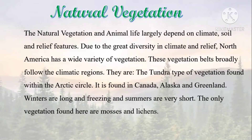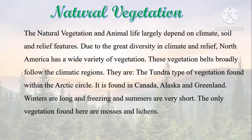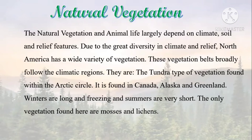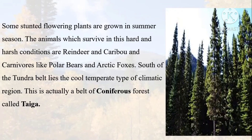Natural vegetation and animal life largely depend on climate, soil, and relief features. Due to the great diversity in climate and relief, North America has a wide variety of vegetation. Tundra type of vegetation is found within the Arctic Circle in Canada, Alaska, and Greenland. Because the winters are long and freezing and summers are very short, the only vegetation found here are mosses and lichens. Some stunted flowering plants grow in summer. Animals surviving in these harsh conditions include reindeer, caribou, polar bears, and arctic foxes.